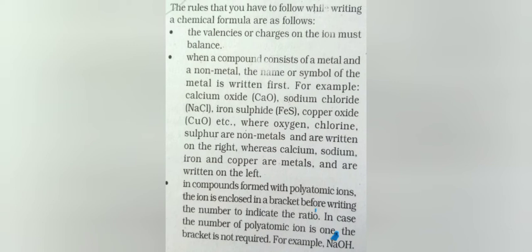When a compound consists of a metal and a non-metal, the name or symbol of the metal is written first. If there is both metal and non-metal in a compound, then first we write the symbol of the metal. For example, in calcium oxide, first we write the calcium symbol which is Ca, and then we write oxide whose symbol is O. In sodium chloride it's NaCl, in iron sulfide it's FeS, in copper oxide it's CuO, etc. Where oxygen, chlorine, sulfur are non-metals and are written on the right, whereas calcium, sodium, iron and copper are metals and are written on the left.